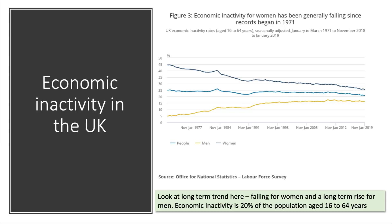This chart looks at economic inactivity rates since 1970. Inactivity for women has been falling quite steadily over the last 45 years, from around 45% down to around 25%. For males, however, economic inactivity has been rising. There has been a modest improvement in the last few years, but it has been a trend increase, and the gap between the two has narrowed.